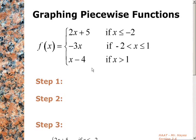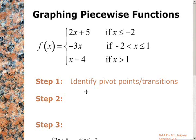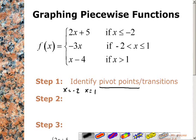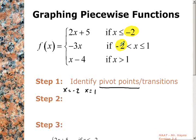There are three steps, and the most important step is where you really need to be able to identify your pivot points or your transitions. In this case, that is where x is equal to negative 2 and x is equal to 1. It's these spots right here. Notice it always overlaps, so we're going to get to that overlap in a second.